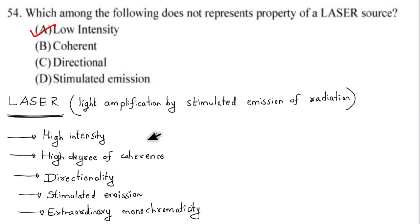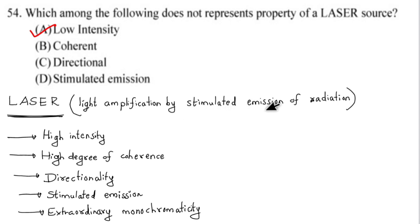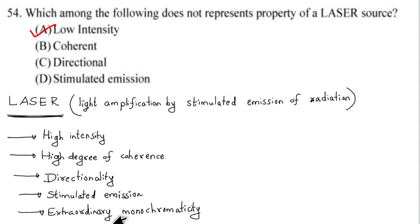Question number 54: Which among the following does not represent a property of a laser source? LASER stands for Light Amplification by Stimulated Emission of Radiation. Properties of a laser source include: high intensity, high degree of coherence, directionality, stimulated emission, and extraordinary monochromaticity.